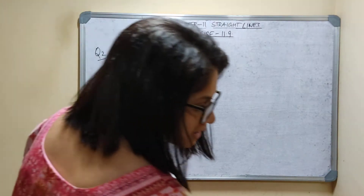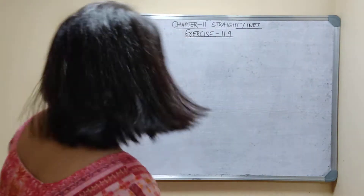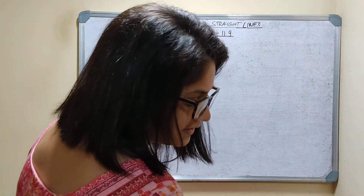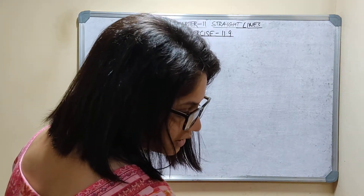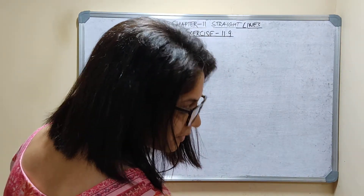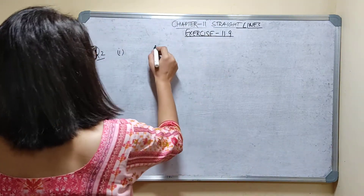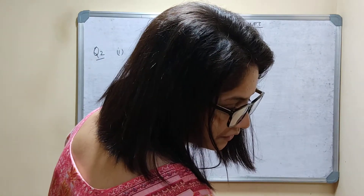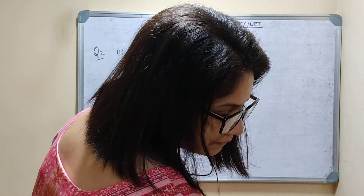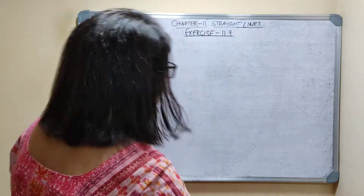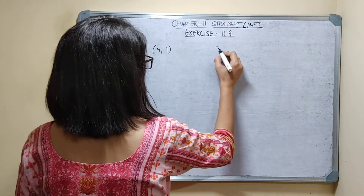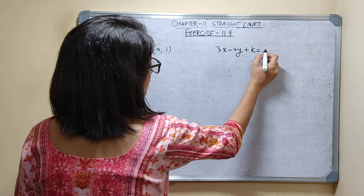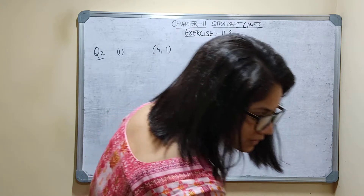Question number 2, first part. Find the value of k given that the distance of the point (4, 1) from the line 3x minus 4y plus k is equal to 0.